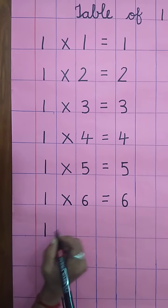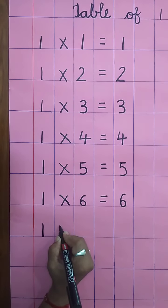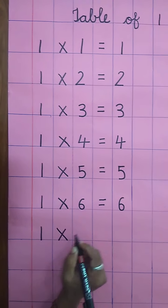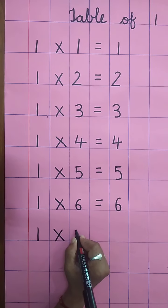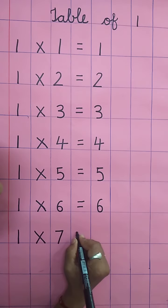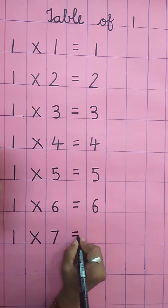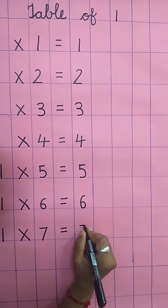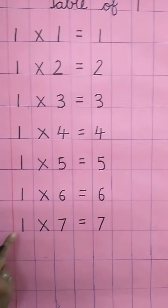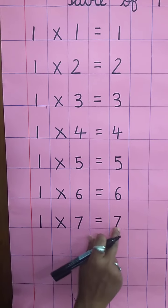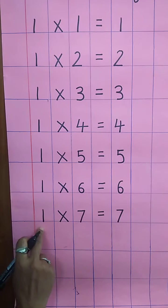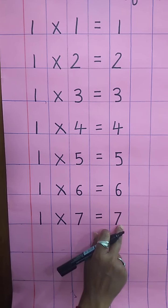Write down one. You have to write. Multiplying sign. Write here seven. Equal sign. Again, write down seven. One seven's are seven. One seven's are seven.